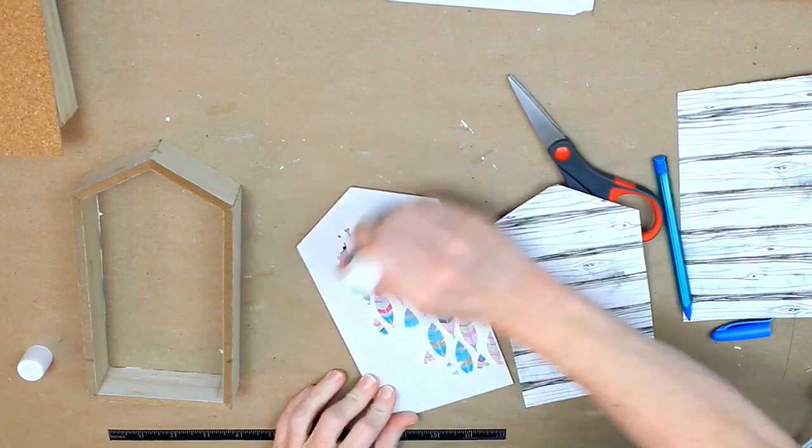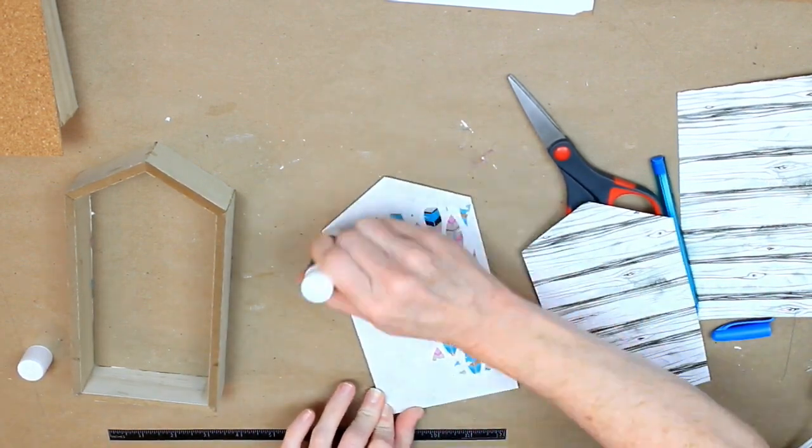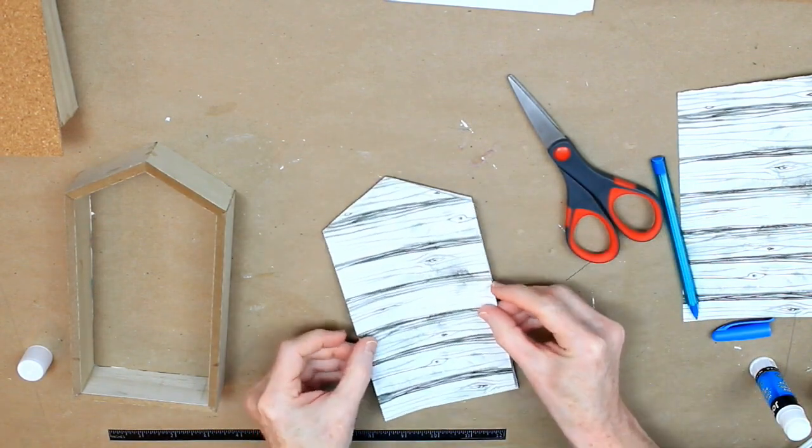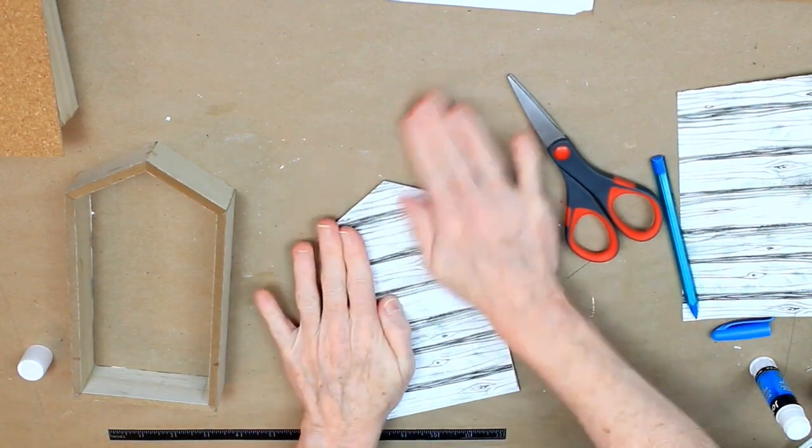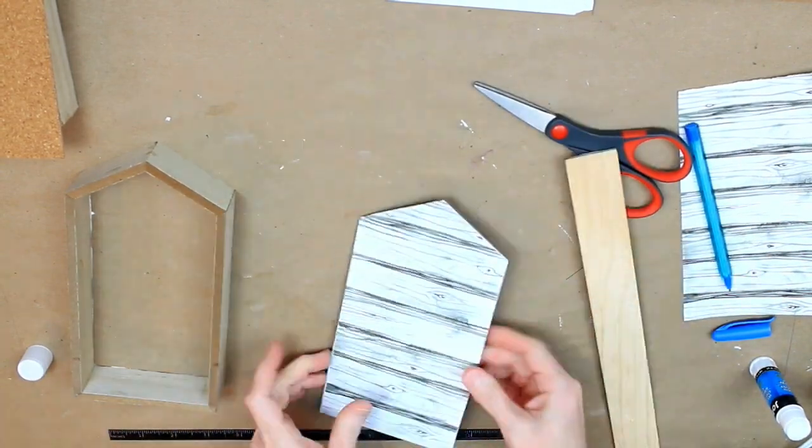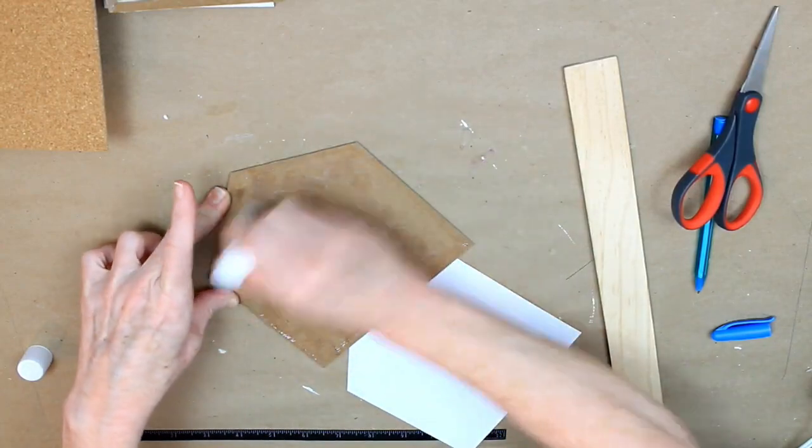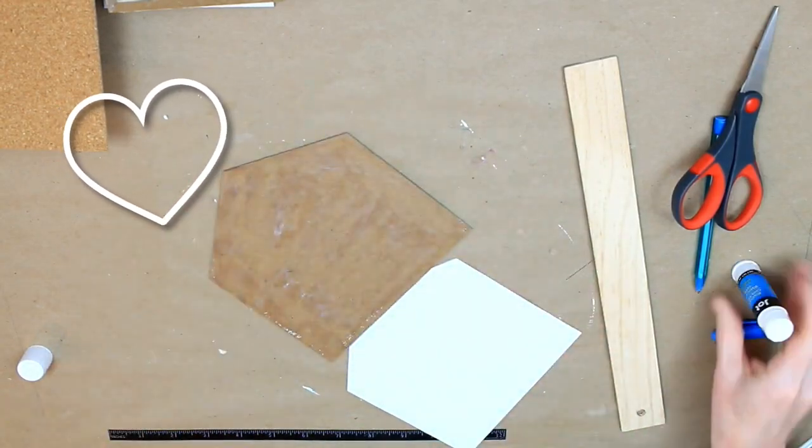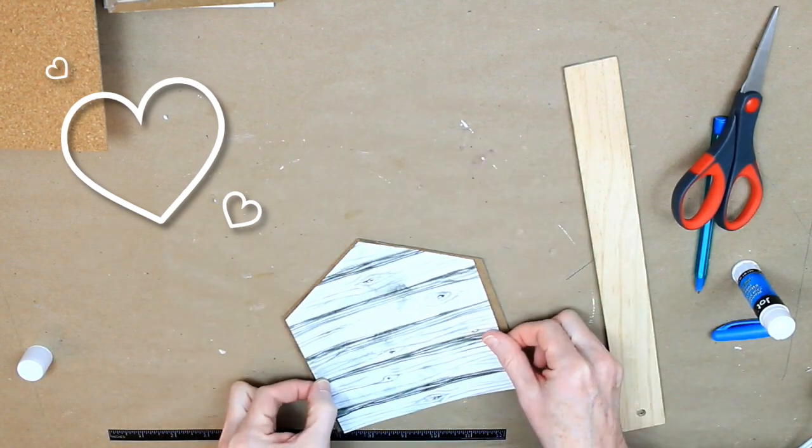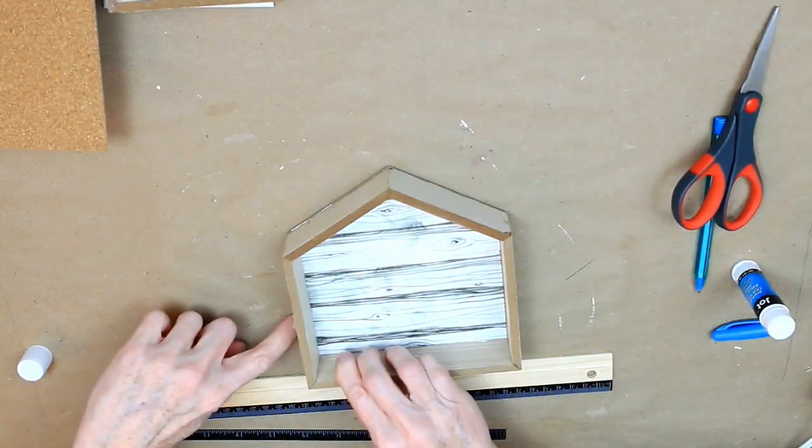And just using a glue stick that came from Dollar Tree. It came in a multi-pack with the school supplies, by the way. I think there were eight in a pack, so that's a really good deal. Just going to put that down and use my handy-dandy ruler to make it lay nice and flat. So here I am doing the same thing on one of the other houses. And you'll see the gaps on the side, but that won't matter because the frame will cover it.